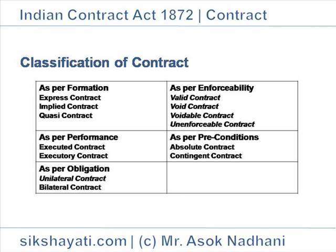Contingent Contract: a contract dependent on the happening of an unknown event. Example: A agrees to sell 10 metric tons of rice if the ship coming from Taiwan reaches safely. The contract is valid if the ship reaches safely, and void if the ship sinks on its way.